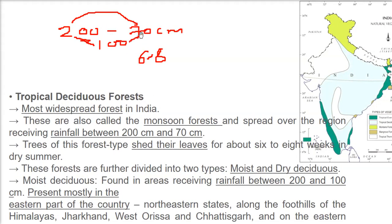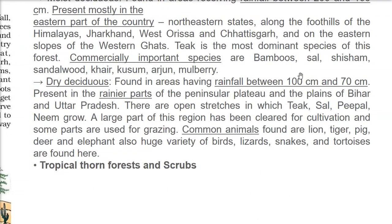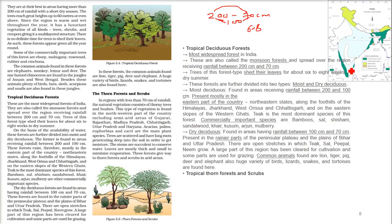Most of the dry deciduous forest area has already been cleared for cultivation and grazing. Common animals found in tropical deciduous forest regions include lion, tiger, pig, deer, elephant, and huge varieties of birds, lizards, snakes, and tortoises.